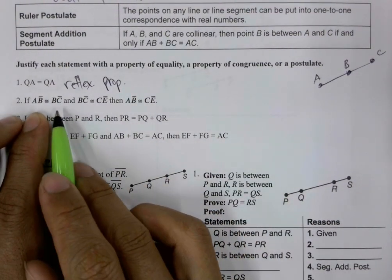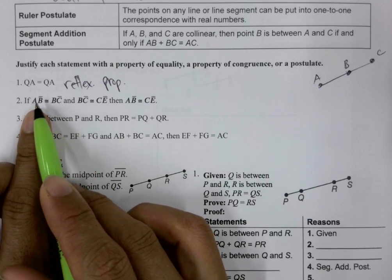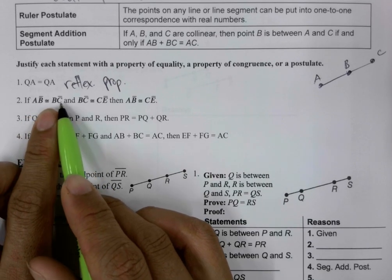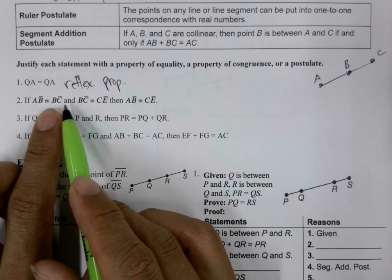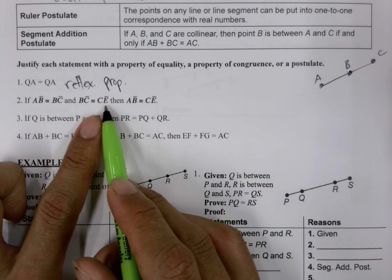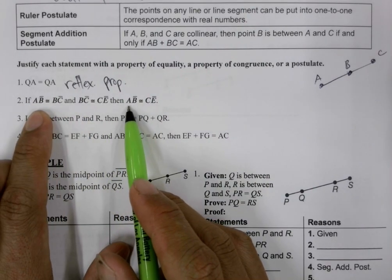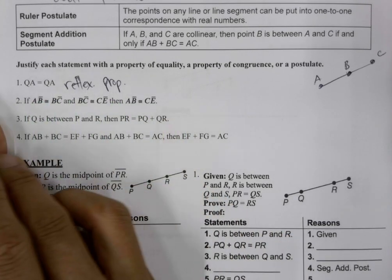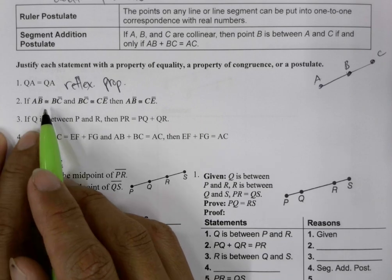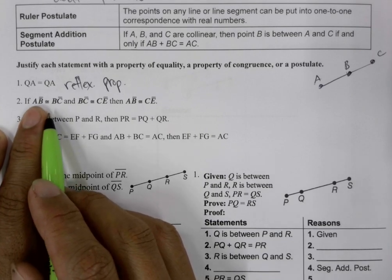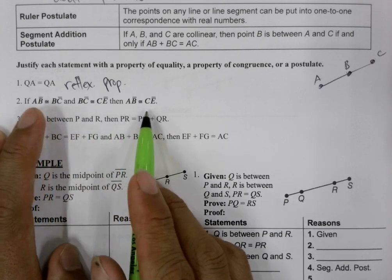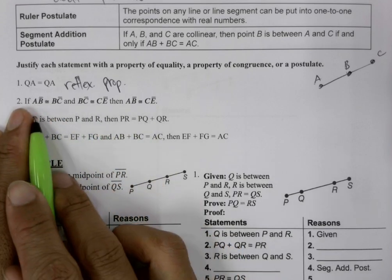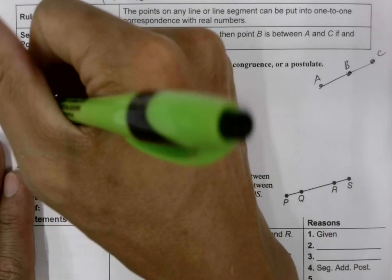Now, this one here is saying if the line segment AB is congruent with line segment BC and BC is congruent with CE, then AB is congruent with CE. In example two, they're using line segments, not the measure. And so, we need to use congruency symbols. And what allows us to say this, it's the transitive property.